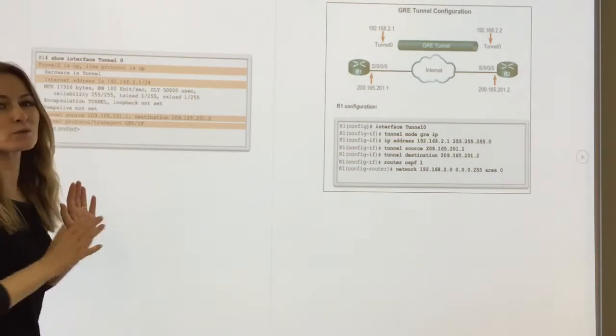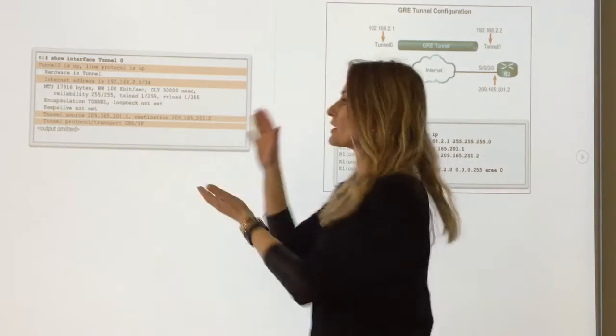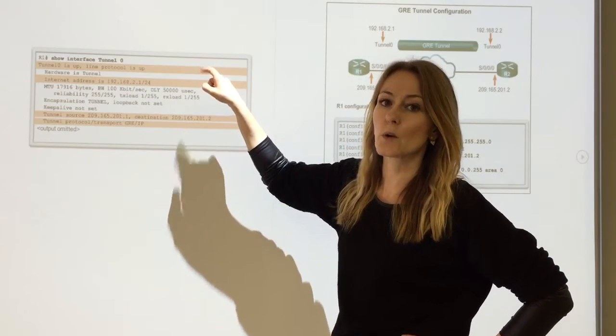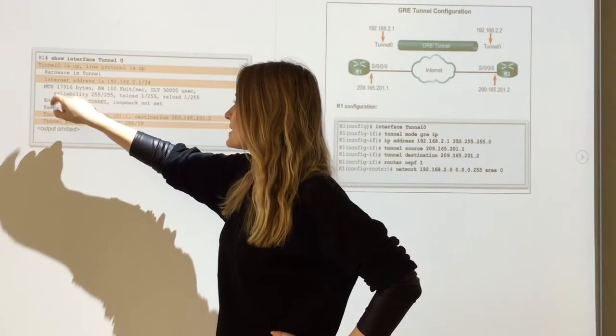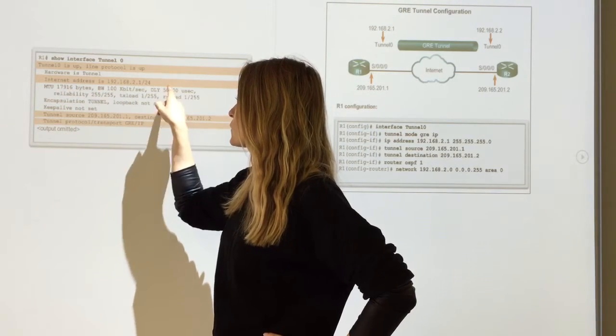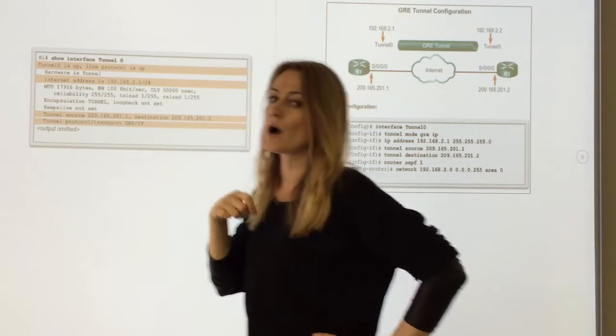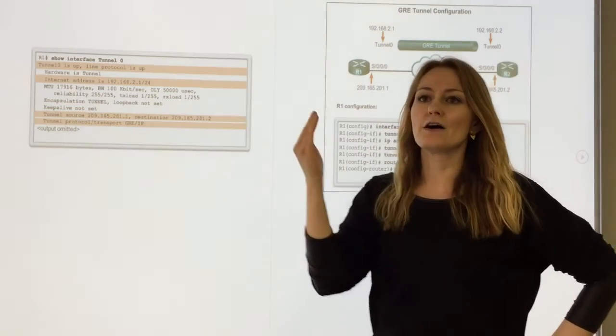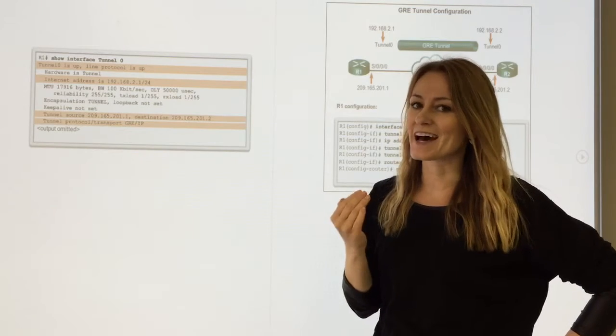If you look over here, which I know is hard to see, when you look at the show interface tunnel zero output, it says the internet address is 192.168.2.1. Well, that internet address is really the entry into the tunnel itself.